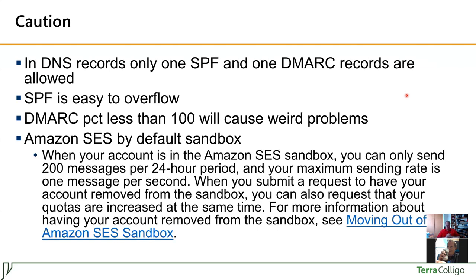There are a couple of problems to mention when configuring this. If you are allowing something like SendGrid, Amazon, or other services to send emails on your behalf, almost all of these servers give advice to add certain records to allow them to send your emails. The problem is — like a Highlander — there can be only one. There can be only one SPF and only one DMARC record in your domain. If you try to add multiple, one of these policies is very likely to fail. Just add one and only one record.